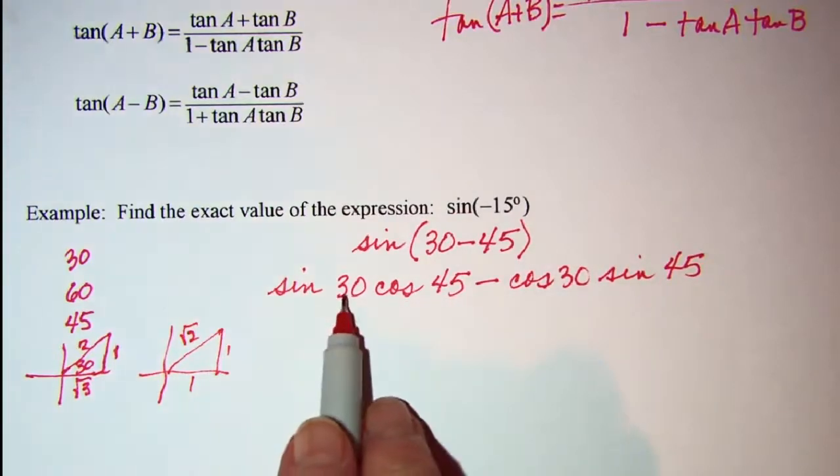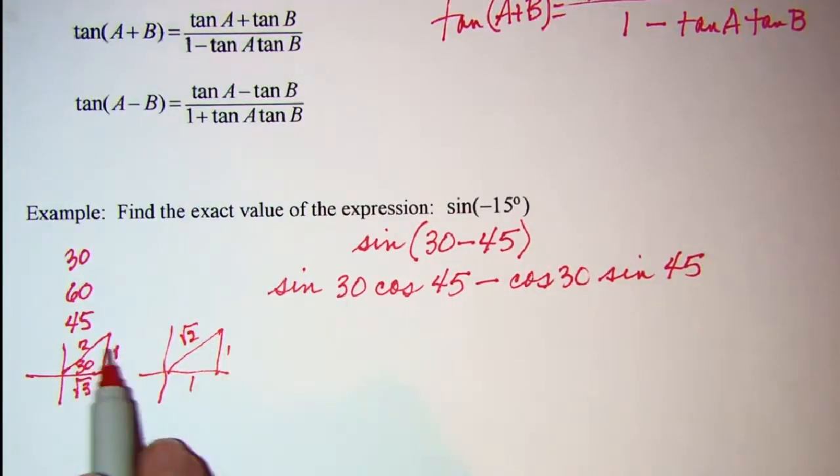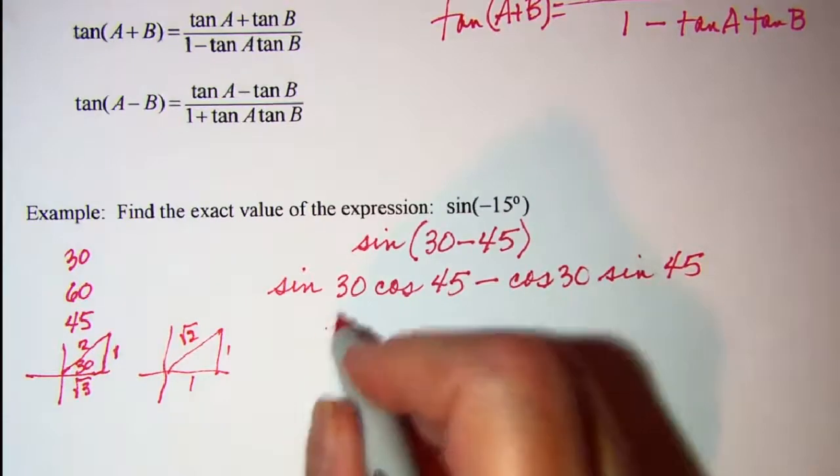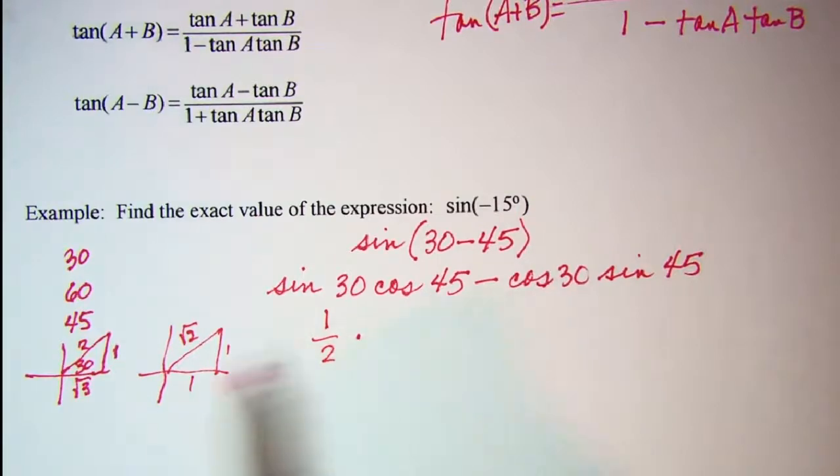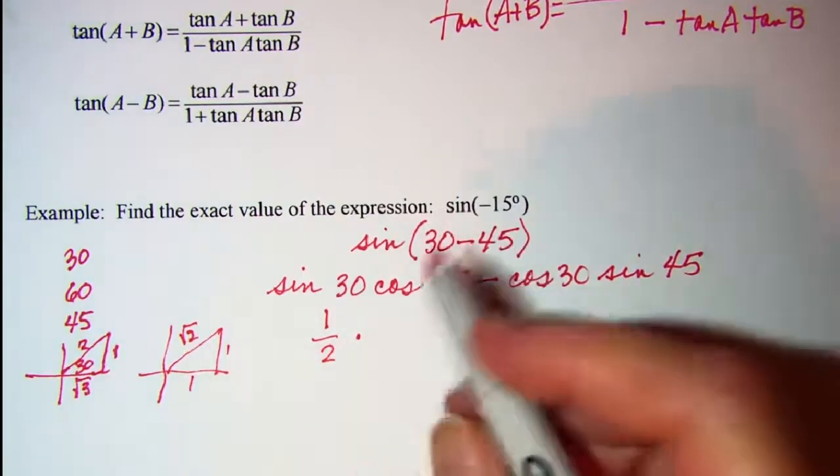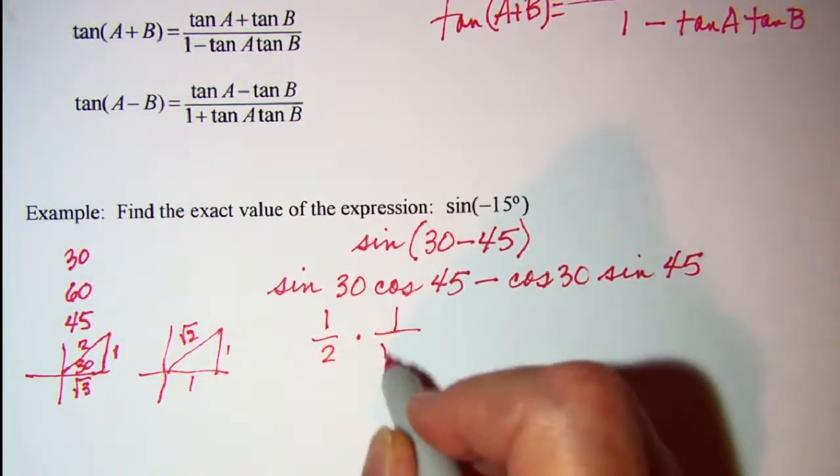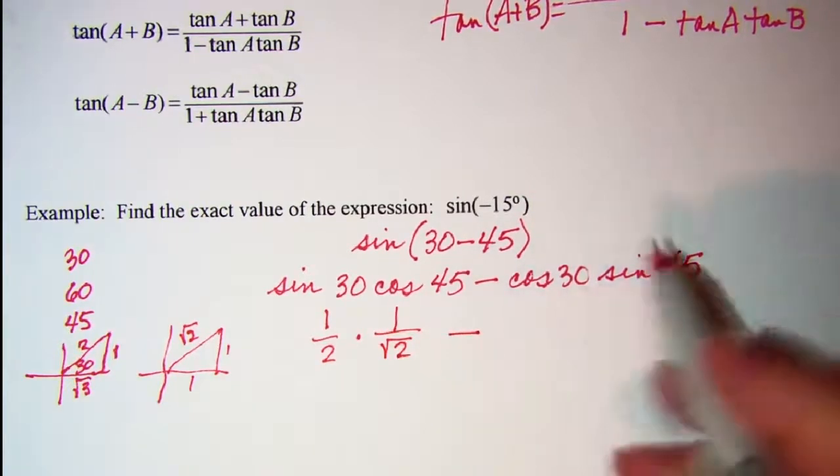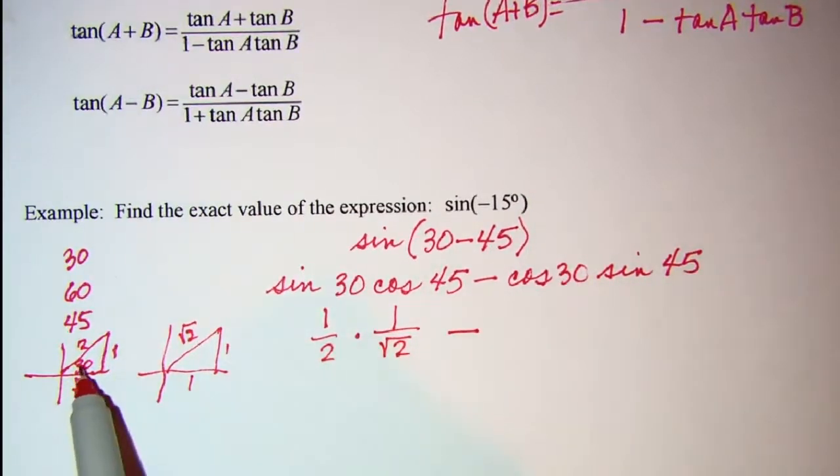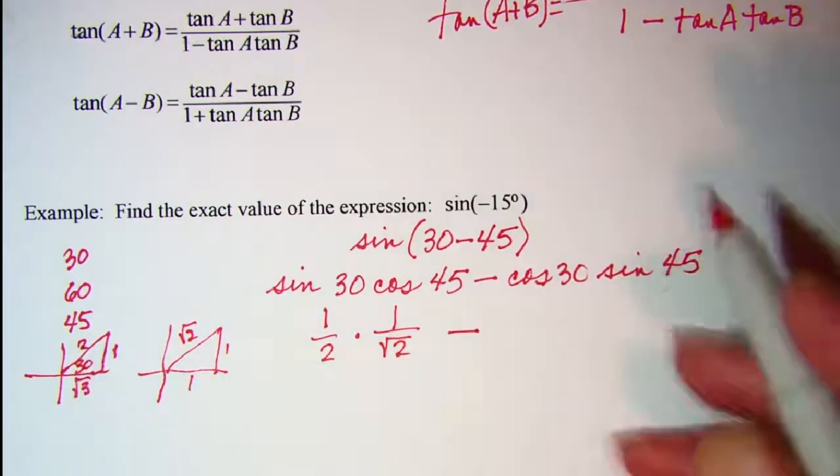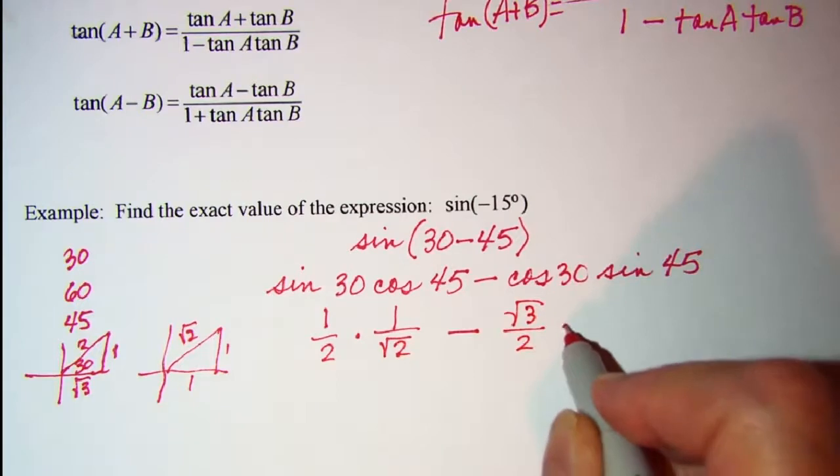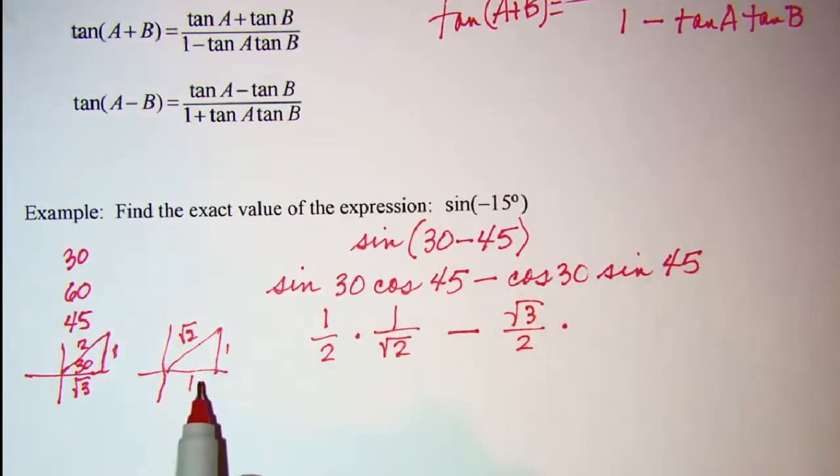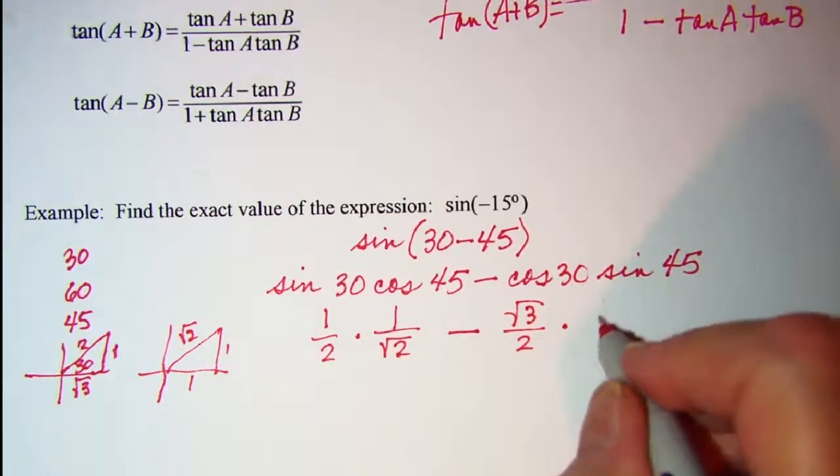So sine of 30 is opposite over hypotenuse, so 1 half times cosine of 45 is 1 over root 2. Minus, and then cosine of 30 is adjacent over hypotenuse, so that's root 3 over 2 times sine of 45 is opposite over hypotenuse, so 1 over root 2.